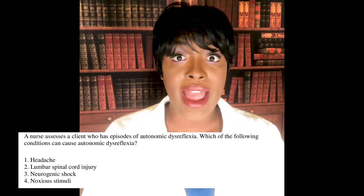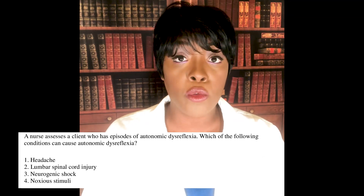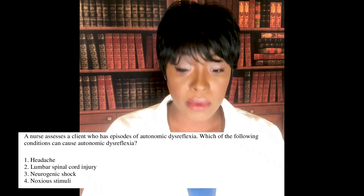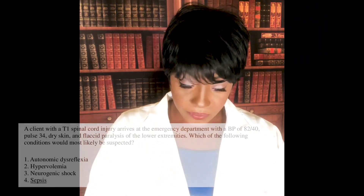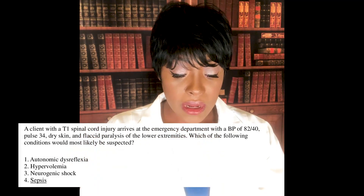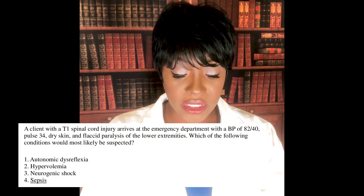Autonomic dysreflexia is a medical emergency. That patient's blood pressure gets so high it goes through the roof — they can possibly stroke out on you.